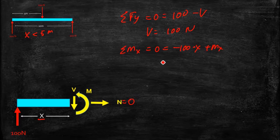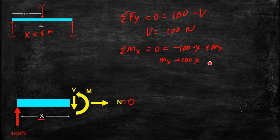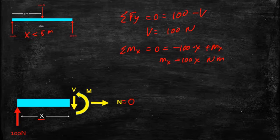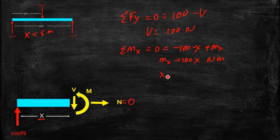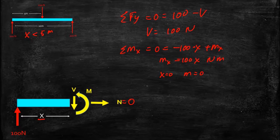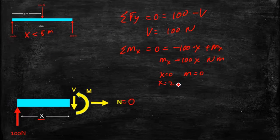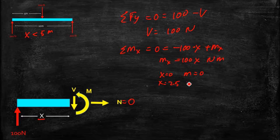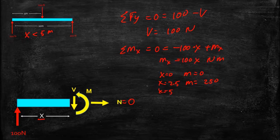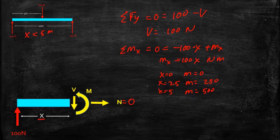So our moment at x is equal to 100 times x, and that's newton meters as our units, and we can calculate a couple values. If x equals zero, our moment is equal to zero, and that makes sense when you're right at the end, there's no leverage, you don't get any bending. x equals 2.5, our moment is going to be equal to 250. If x equals 5 meters, our moment equals 500 newton meters.